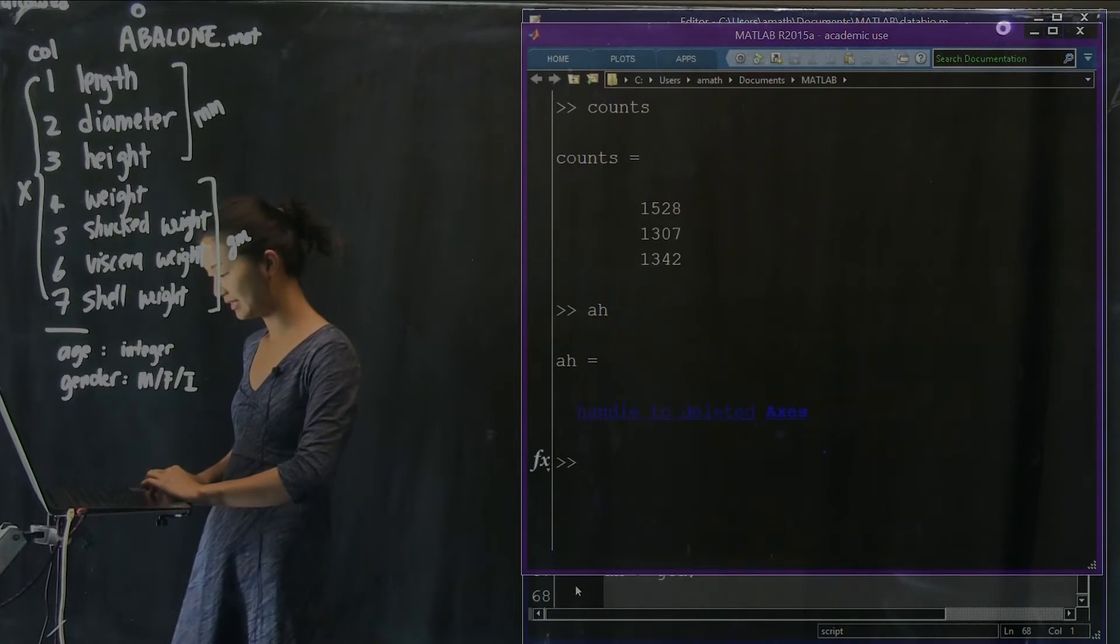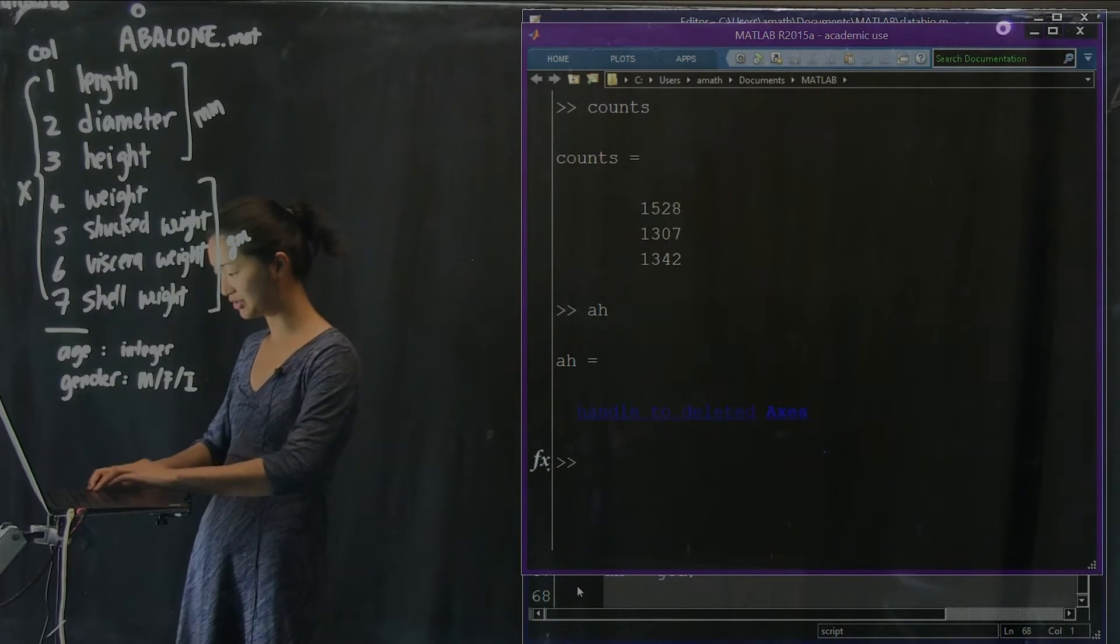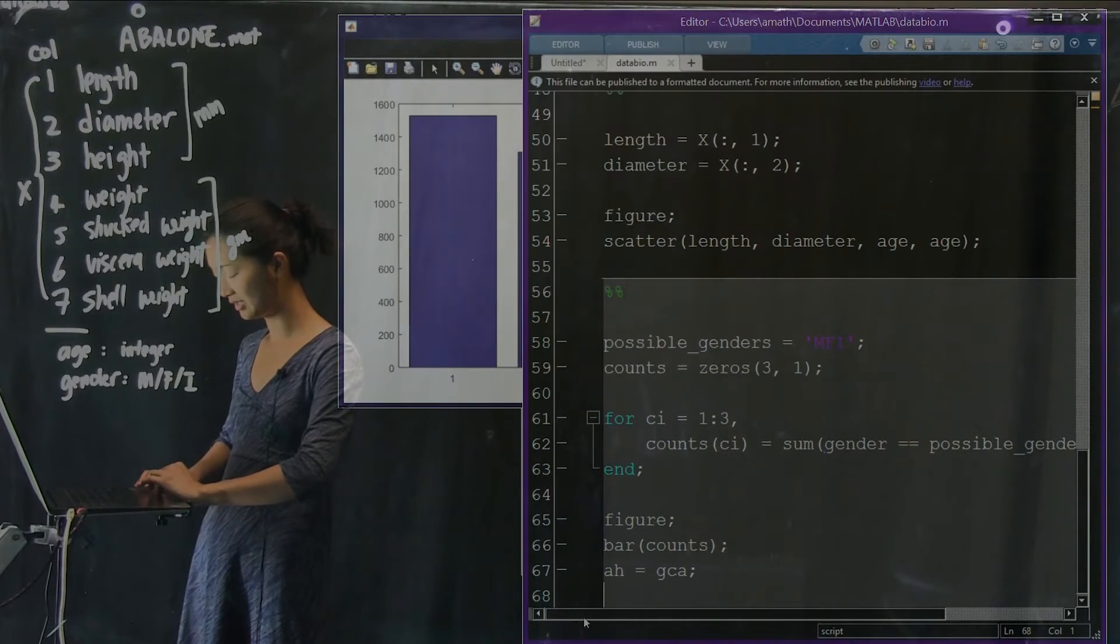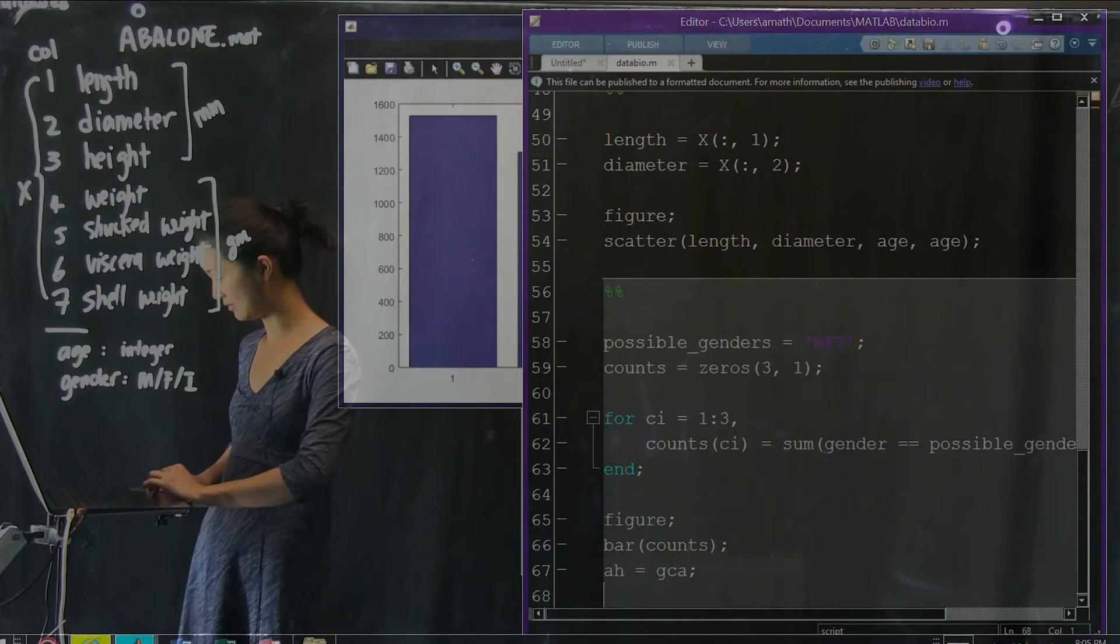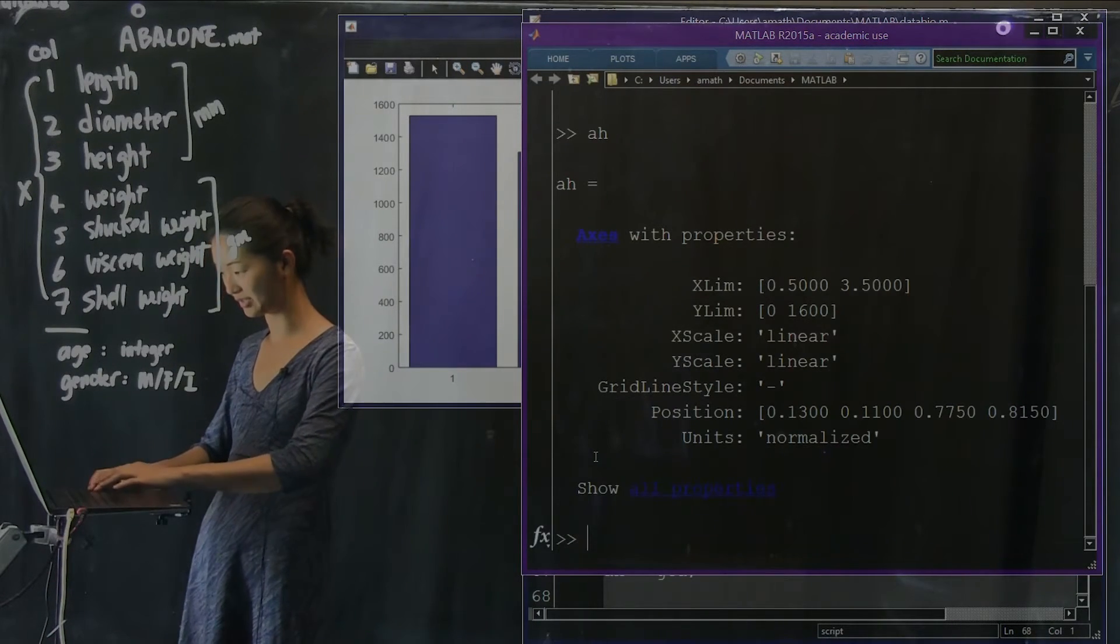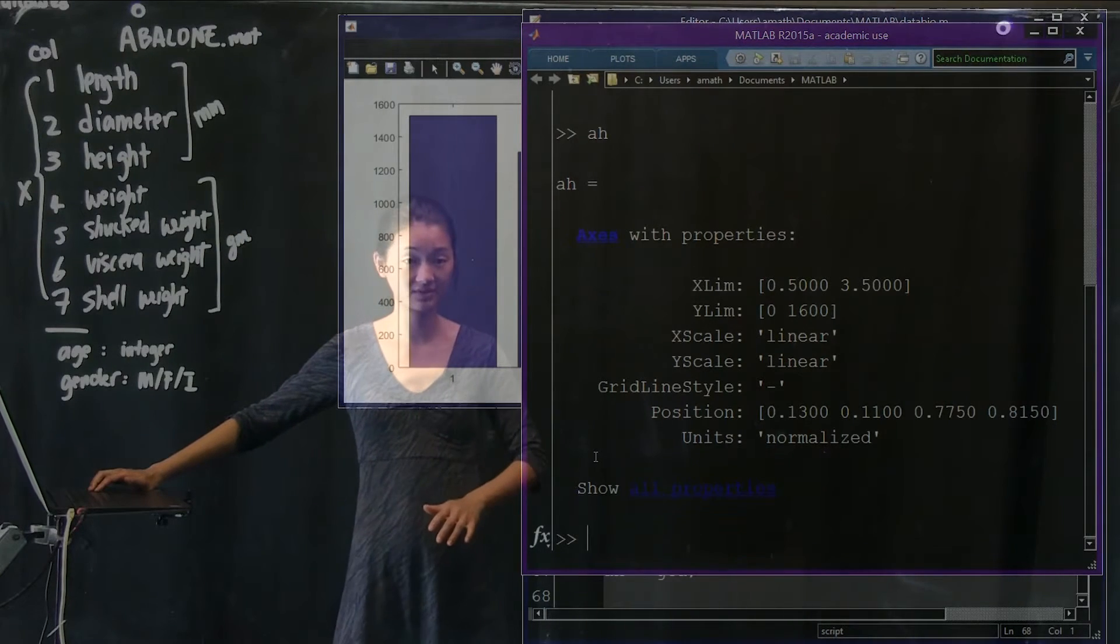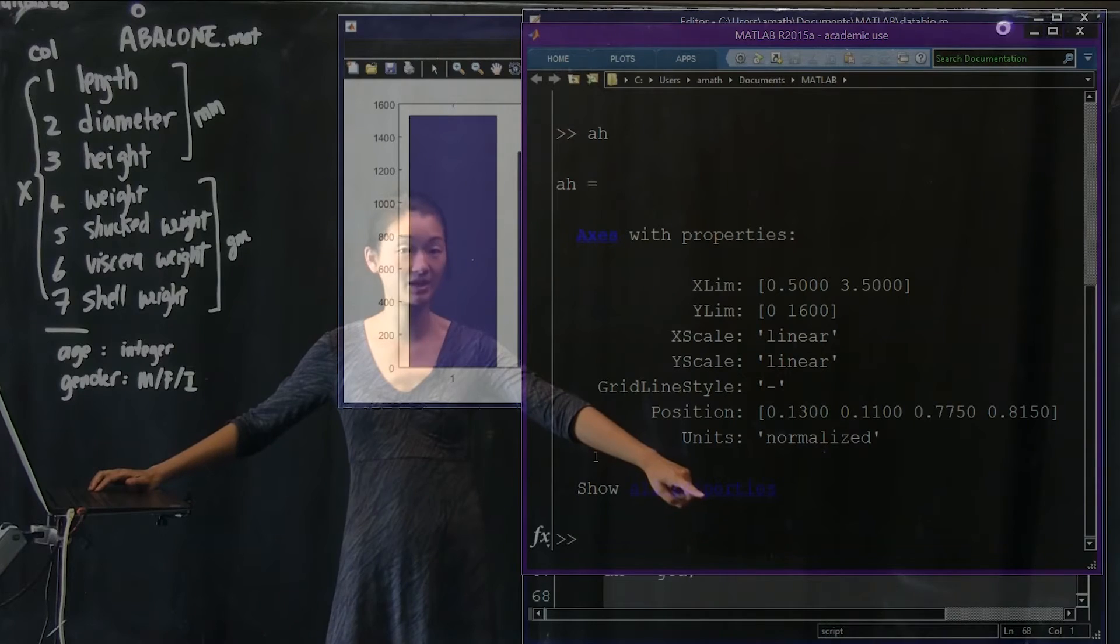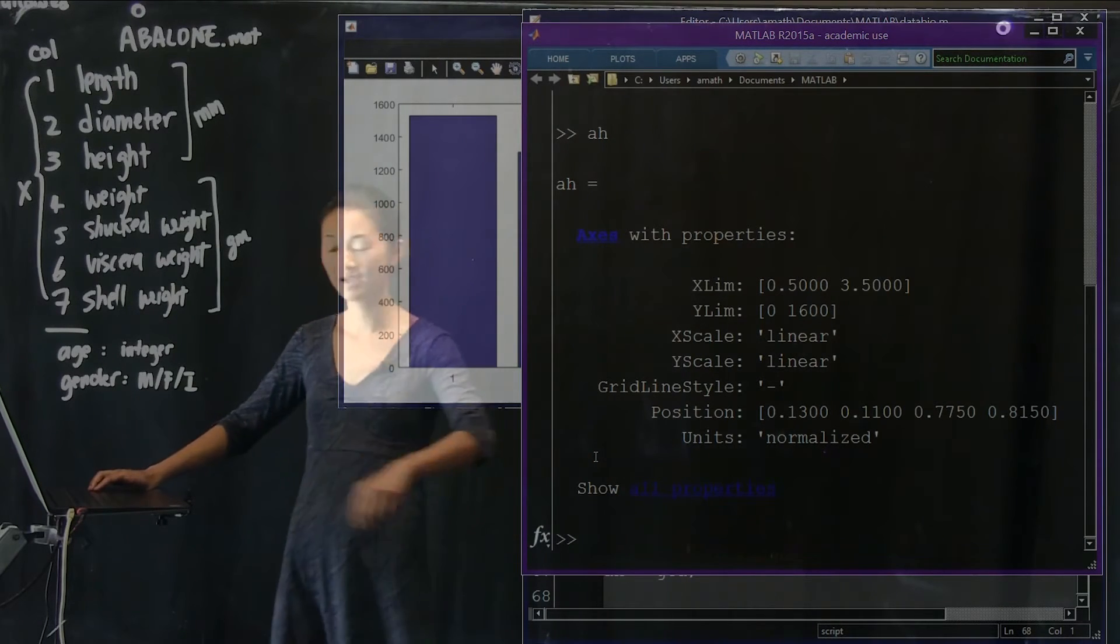Now, what we can do is change all the properties of AH here by looking at it. Here's all the properties. Here's axes with all the properties. And there's a lot of properties. You can click on that button right there that says all properties to make it show you all the properties.